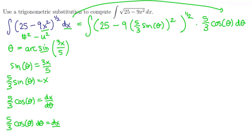That's a mess. We need to clean this up. So let's focus on this piece first. We have 25 minus 9 times that would be 25 ninths the sine of theta quantity squared if we square the terms.